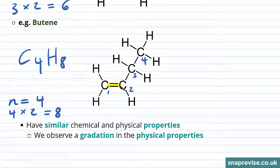Now, as we know, as it's true of homologous series, our alkenes have similar chemical and physical properties. We will observe a gradation in the physical properties of our alkenes.